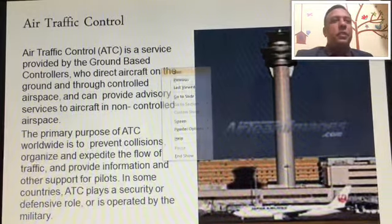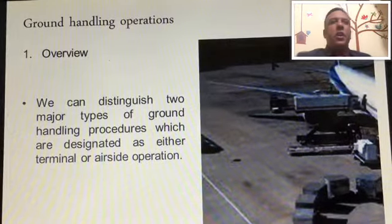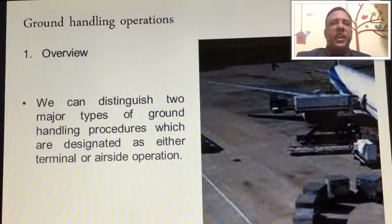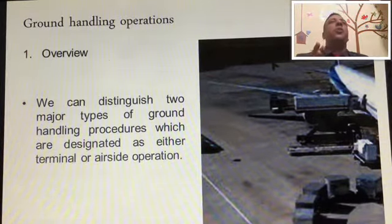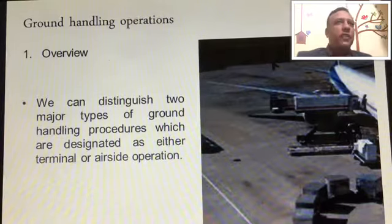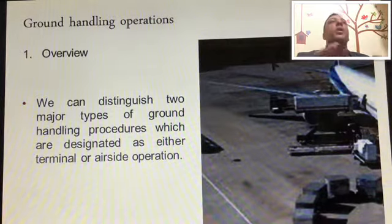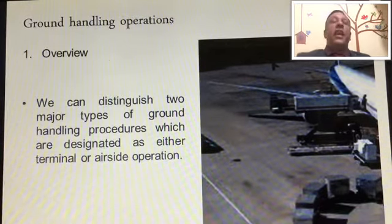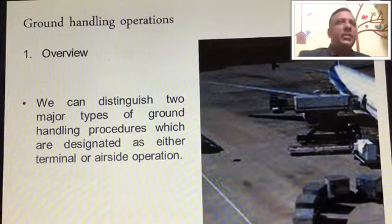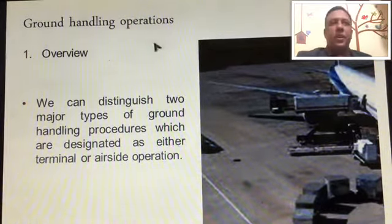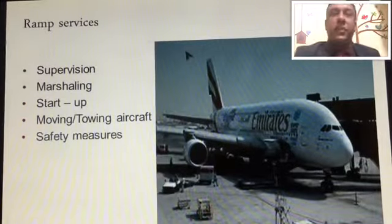Now we move to ground handling operations. We distinguish ground handling operations into two major categories. The first is air side — operations involving all aircraft movements from the concourse to the ramp, where activities like baggage handling and cargo handling take place. Land side is the area before you enter the airport, where the terminal building and check-in concourse are situated.